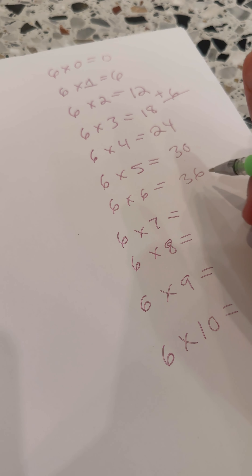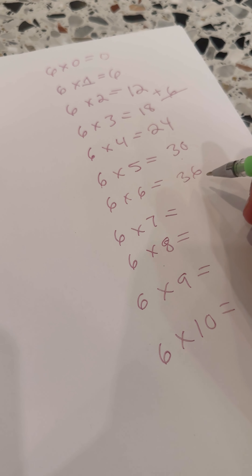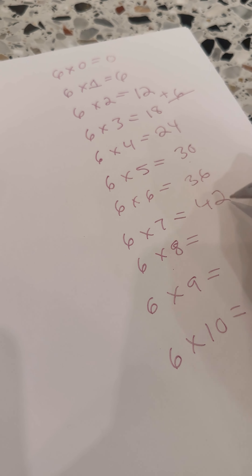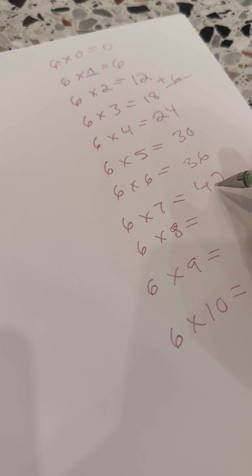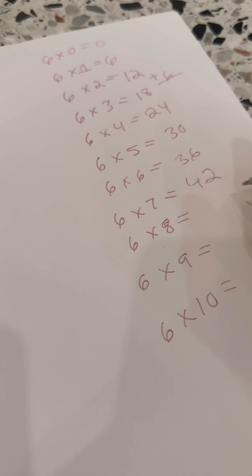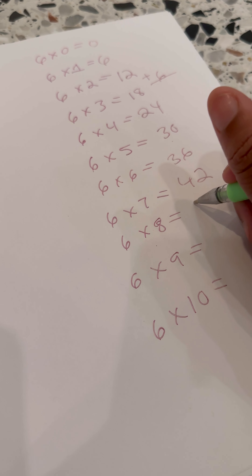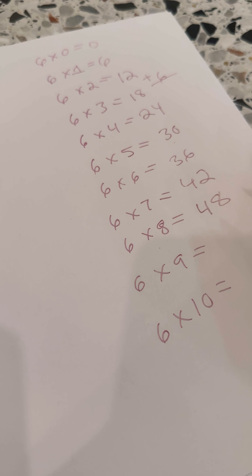36 plus 6 more — I had to do my math better. I got 2 left over. 42. What's 6 times 8? All you're doing is adding 6 more. He's like, oh Mom, that's easy. That's going to be 48.